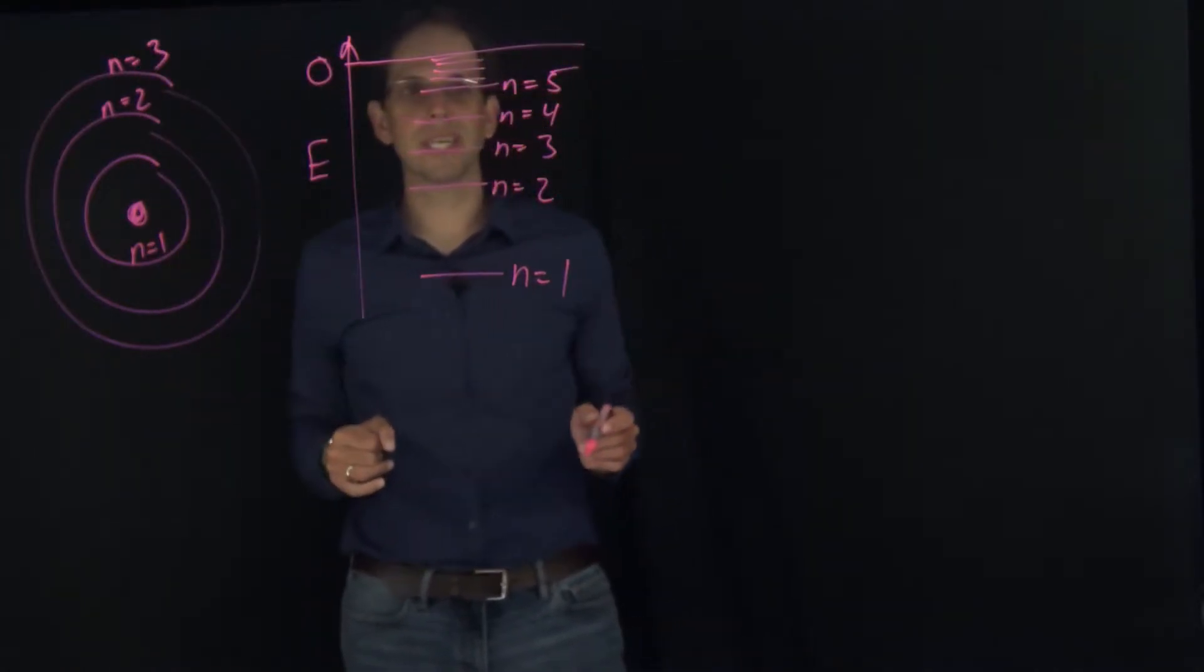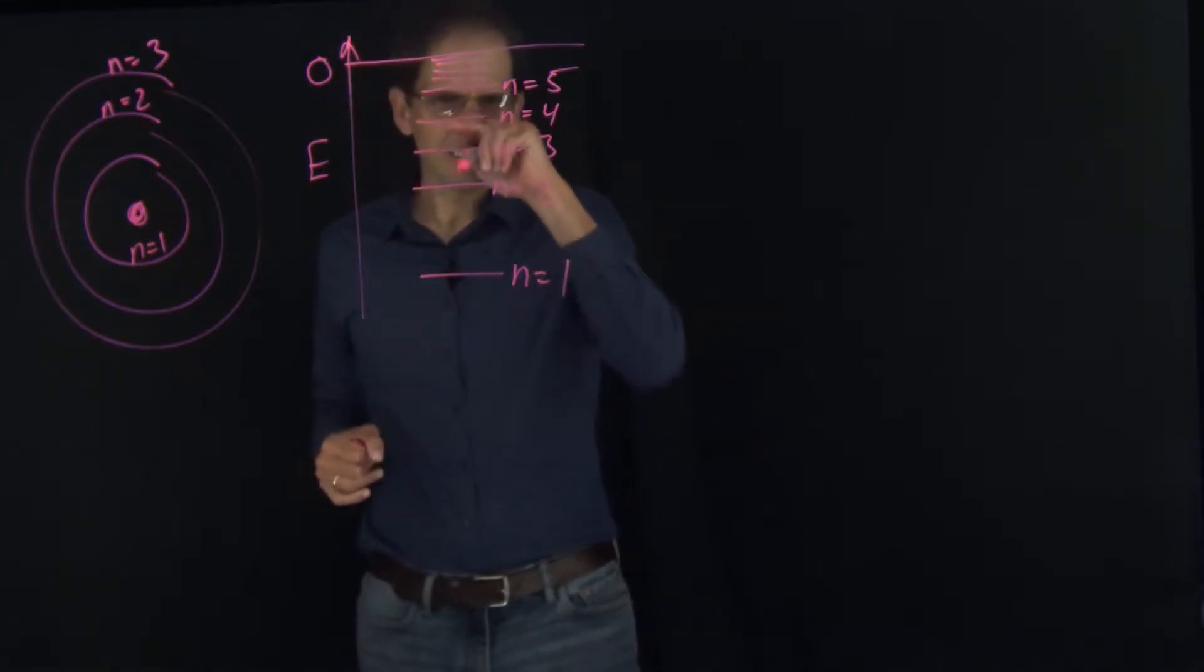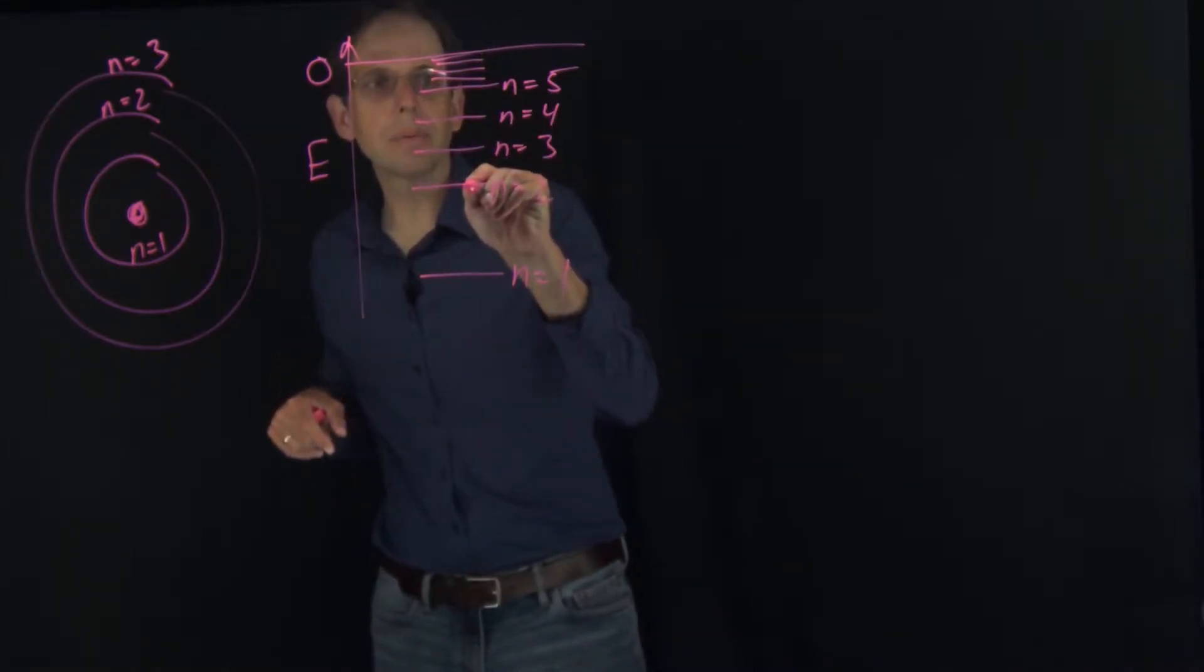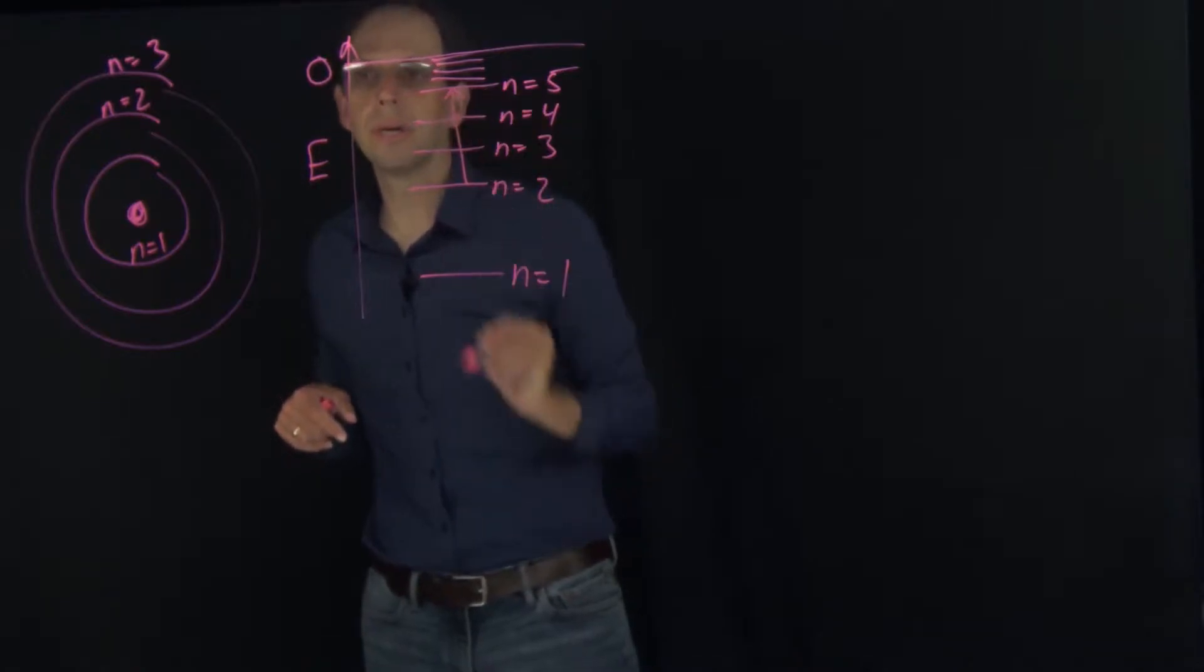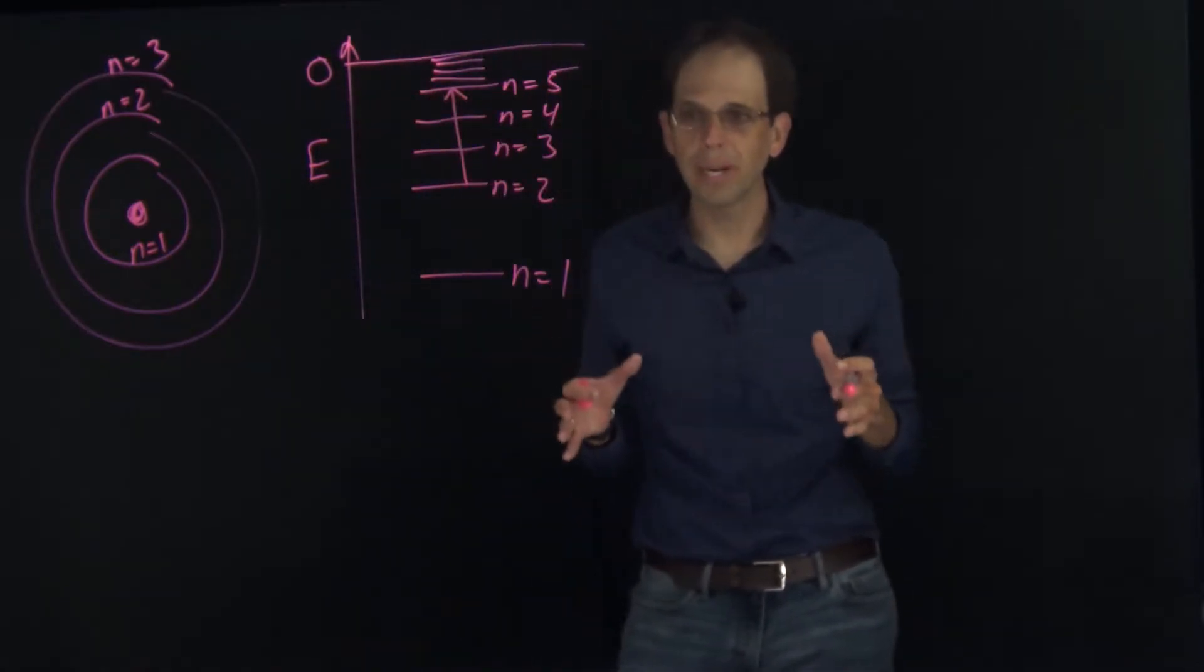For example, we might send light in and cause a transition from the n equals 2 up to the n equals 5 orbit.